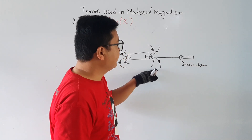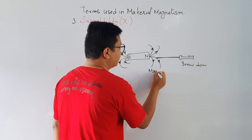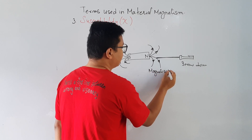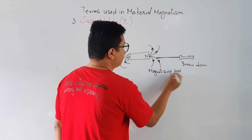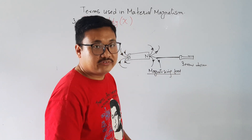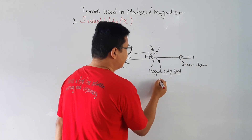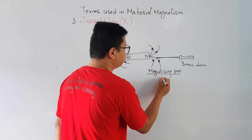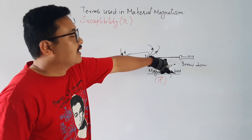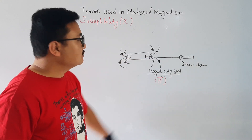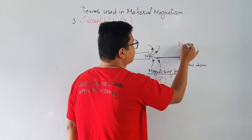This field is my magnetizing field — the magnetizing field which is magnetizing the screwdriver, and this magnetizing field is my H-vector.